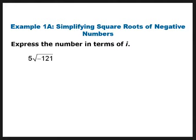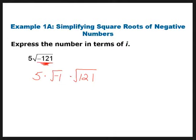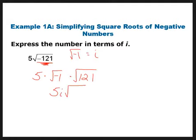Let's start simple. I'm going to focus on what's underneath the square root and rewrite everything as multiplication. I've separated the negative from the 121 under the radical. Since √(-1) = i, what I have is 5i times √121. The square root of 121 is 11, so I have 5i times 11, which gives me 55i.